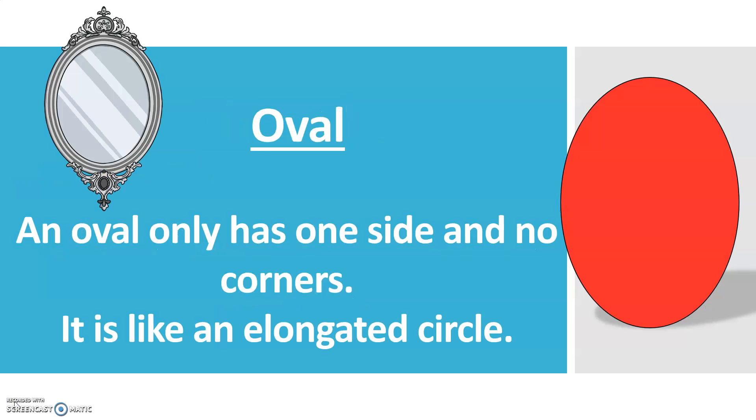An oval. An oval is round like a circle, but it's not perfect like a circle. It's like a stretched circle or an elongated circle. There are no corners and just one side. An example of an oval might be a mirror or an egg shape.